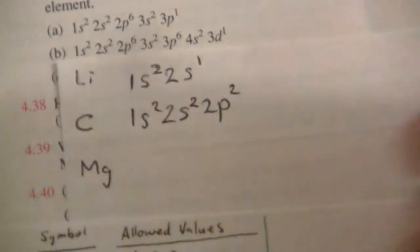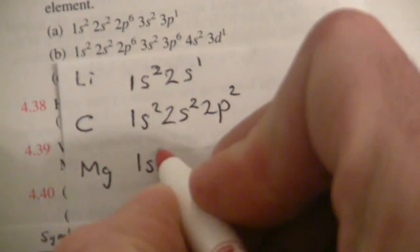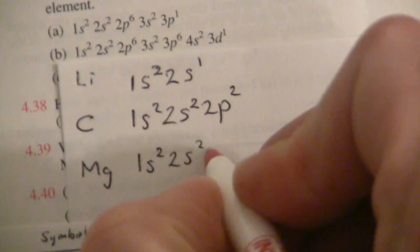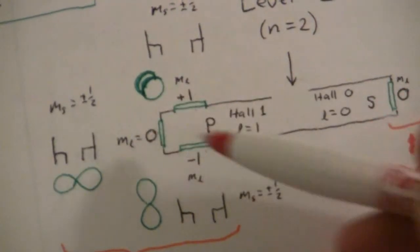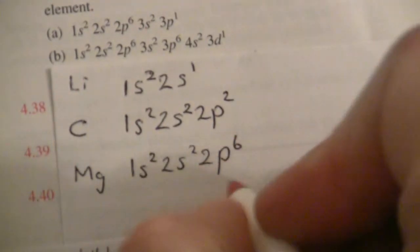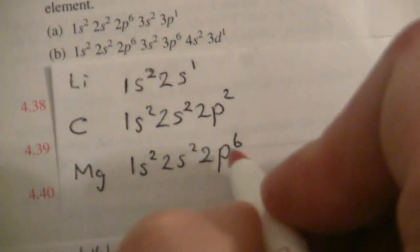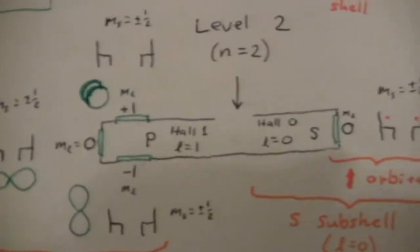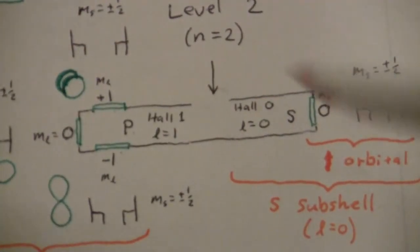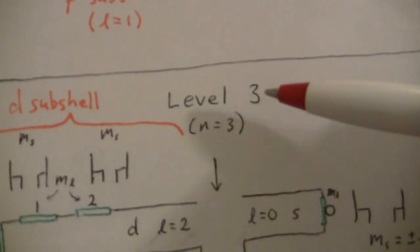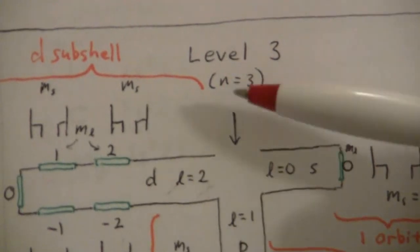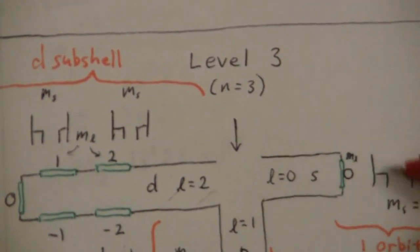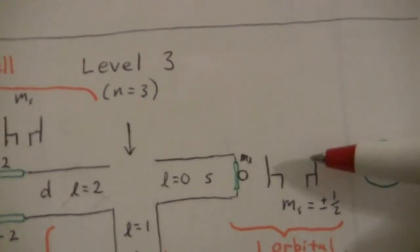Now, magnesium has twelve electrons. So it starts out 1s² 2s² 2p. Now this time, we're here, and it has enough electrons to fill the whole orbital. So that's gonna be 2p⁶. So two, four, and ten. We have two more electrons. But we've filled this entire shell. So we have to go up to level three, N equals three. That'll be the 3s².